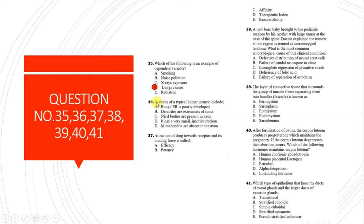Question 36: Features of a typical human neuron include that dendrites are extensions of the soma. Option B is the correct answer - dendrites are basically extensions of the soma.